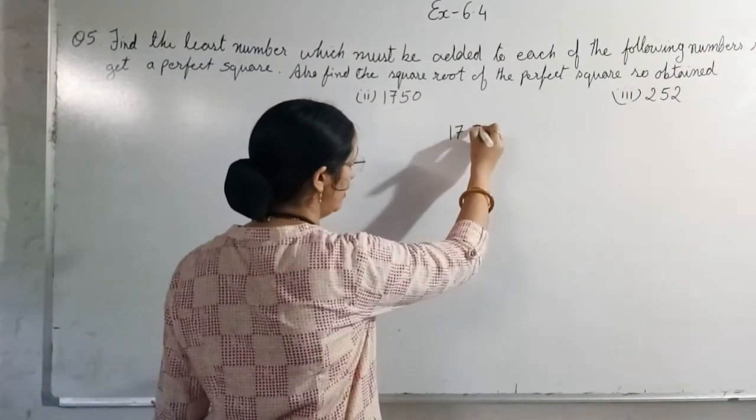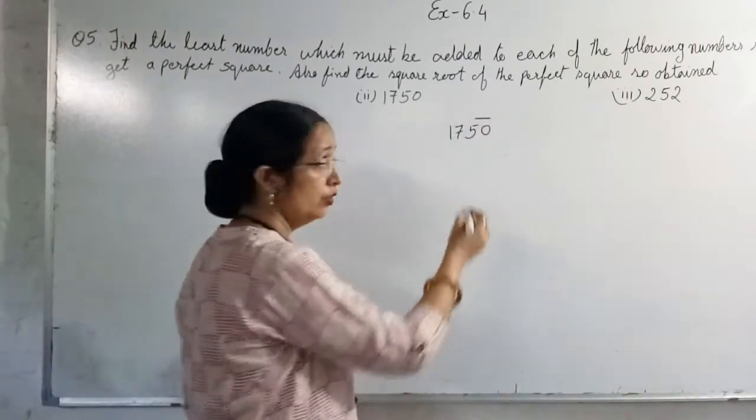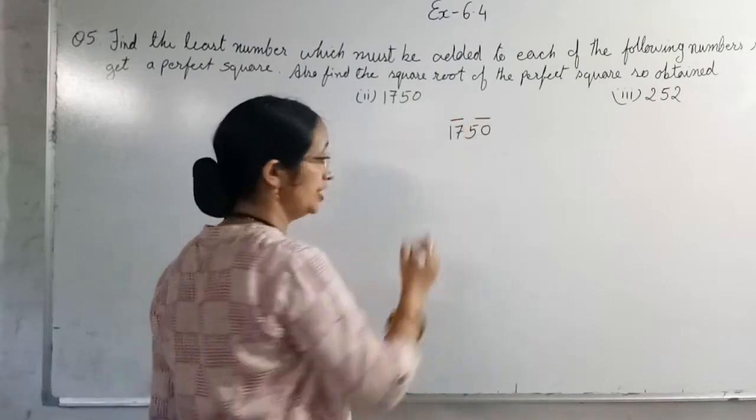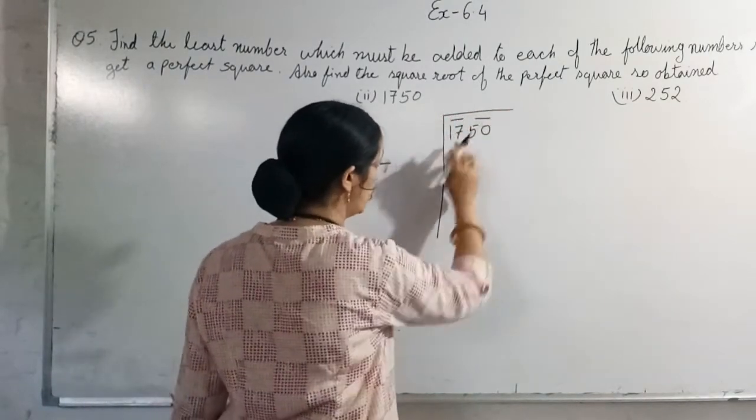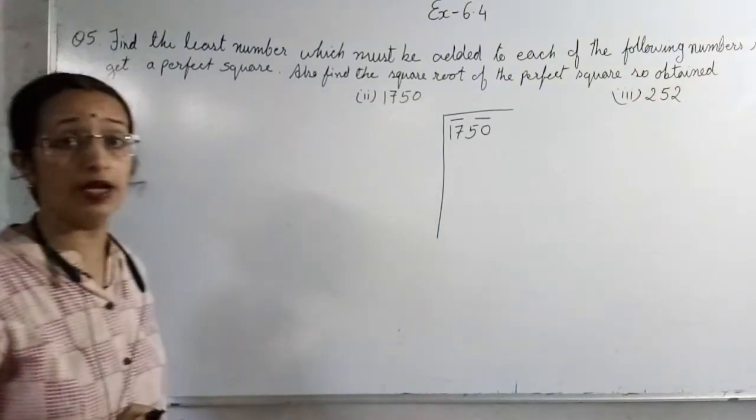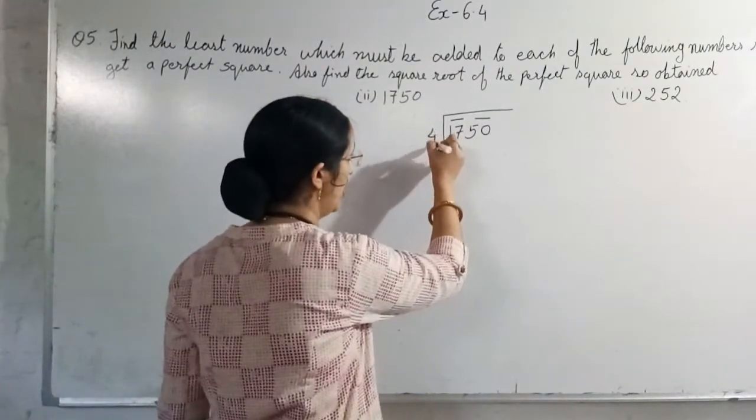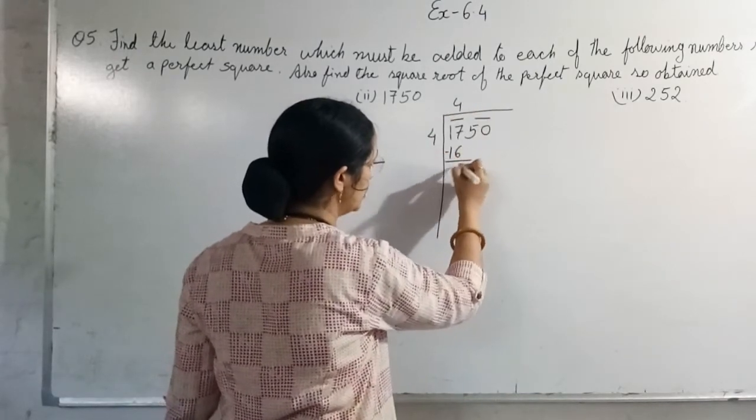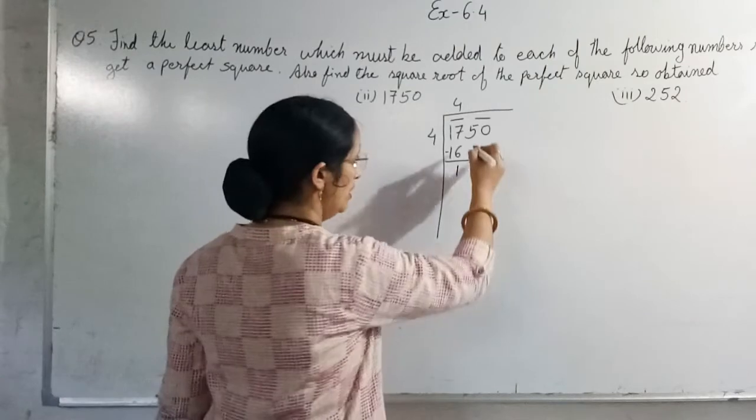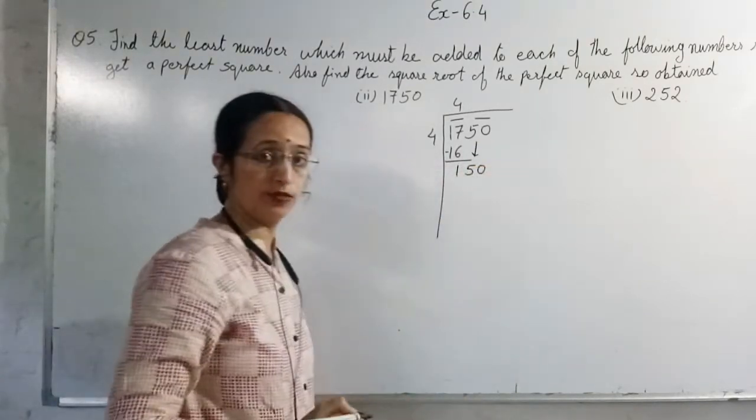Long division method again, groups of two. You start from one's digit. By this time it should be thorough. You will always go by perfect square number and we will go by four because four fours are sixteen.